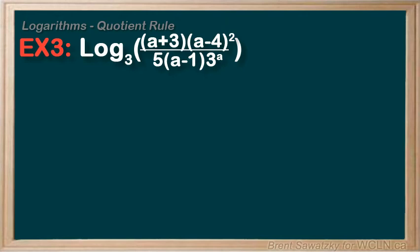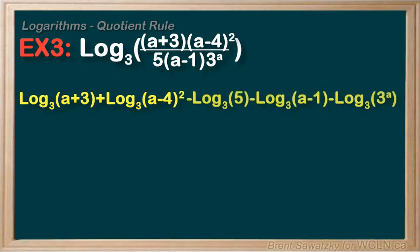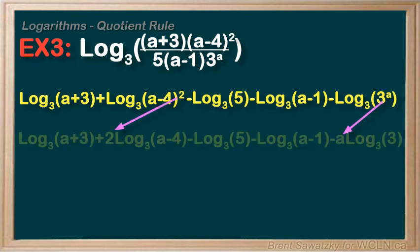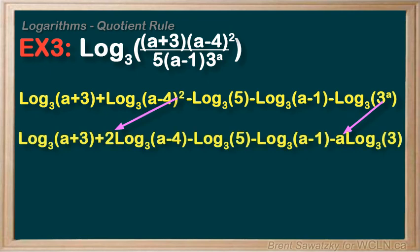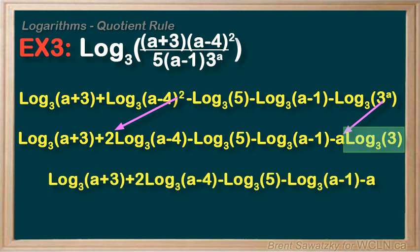Let's start breaking this down. In the numerator we use the product rule, giving us log additions. For the denominator we're dividing each item, so the quotient rule gives us log subtractions. Now we see two exponents, the 2 and the a, so using the power rule we change those to multiplications. Then we notice log base 3 of 3 is just 1, so we simplify that down. And we're there — here's our expanded result.